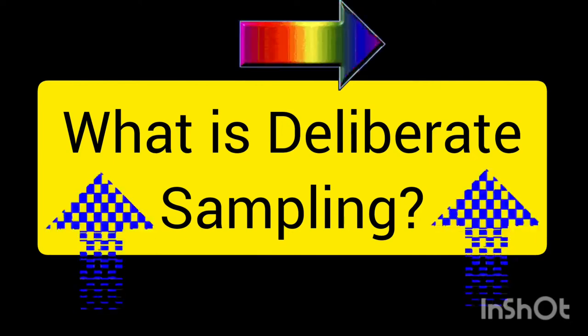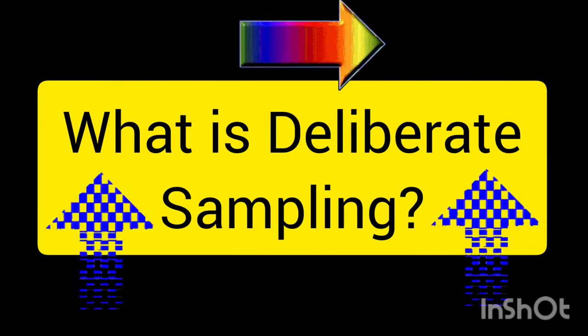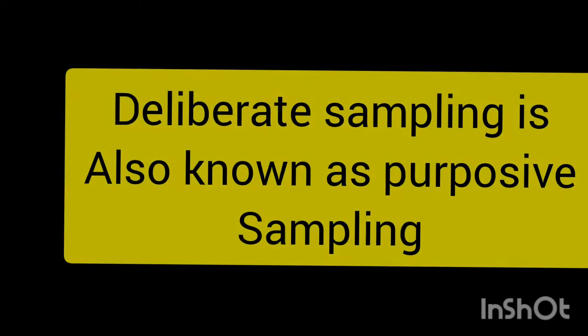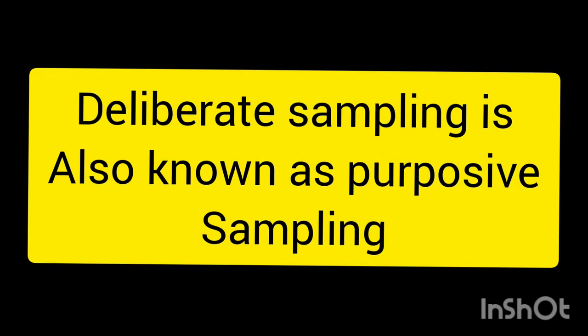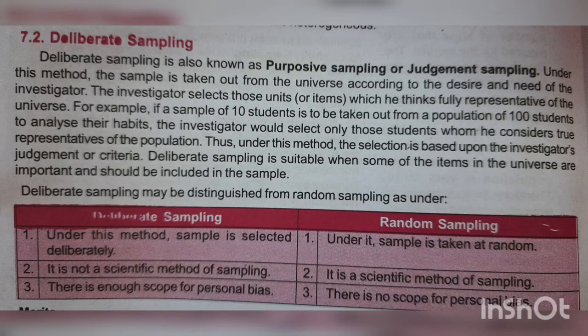There are two types of sampling. One is random sampling and the other one is deliberate sampling. Random sampling is sampling which is taken at random and there is no chance, judgment, or bias involved in this. But the second type of sampling that we have is deliberate sampling.